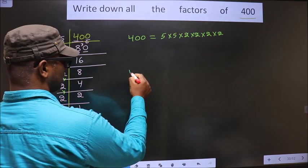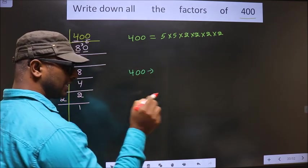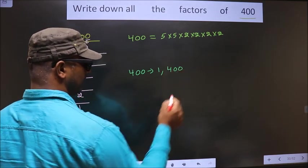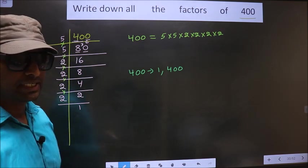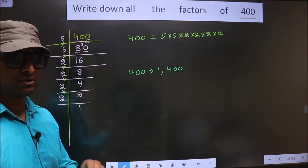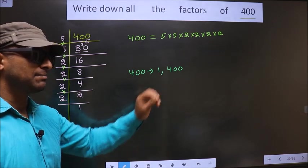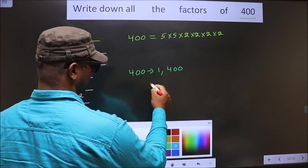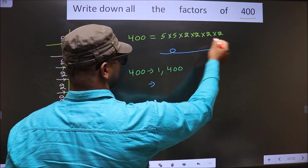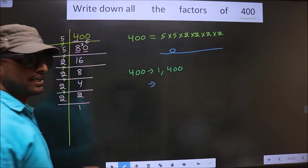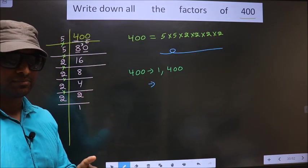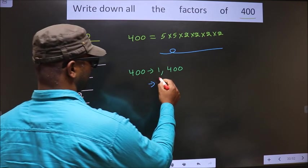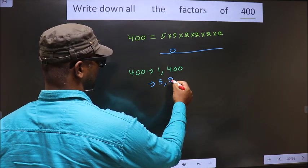Any number you take will definitely include 1 and the number itself in its factors. Now from these prime factors, if you select one different number at a time, we get 5 and 2.